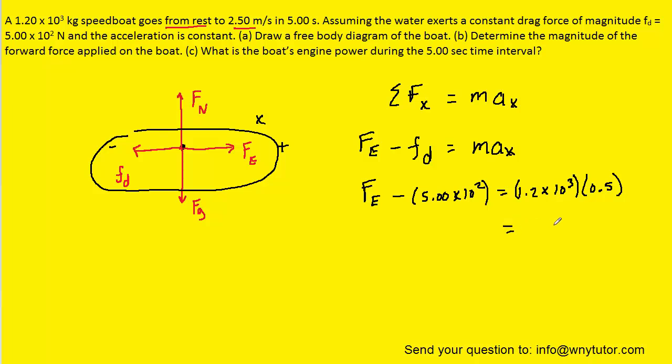And then what we could do is multiply the two quantities on the right-hand side, which gives us 600 newtons. And then we can add this 500 newtons over to the other side. And so Fe turns out to be 600 plus the 500 newtons.